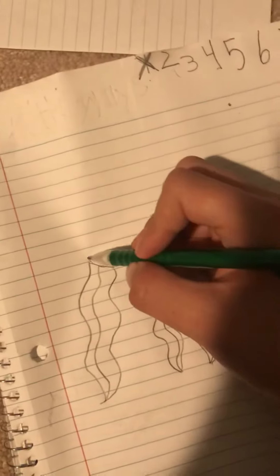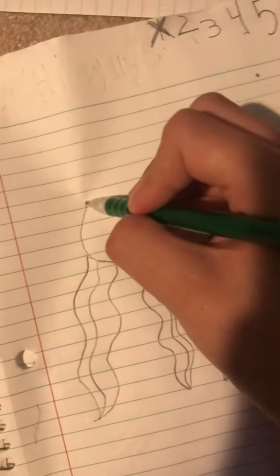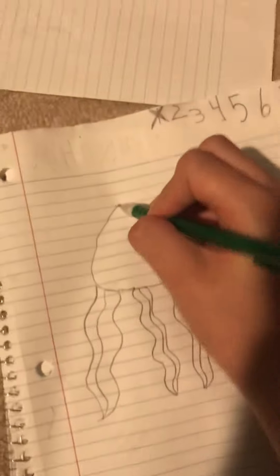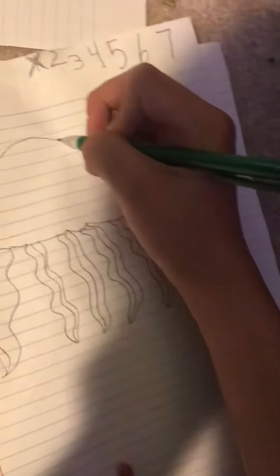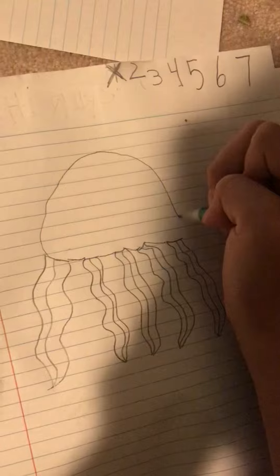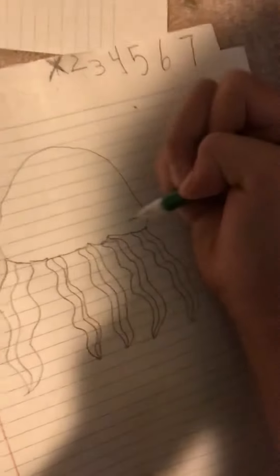Doesn't matter how many tentacles you have, as long as it's not like one or two. I just want to kind of draw a big circle. Don't know why I need to do this.